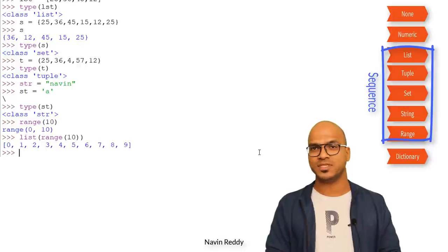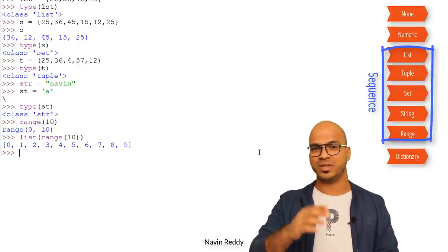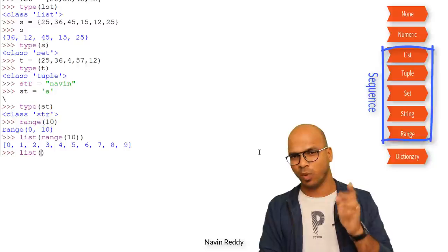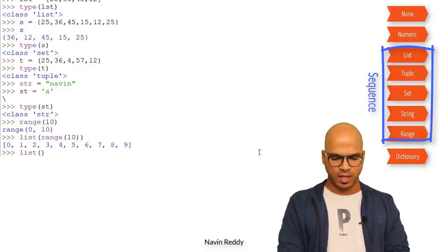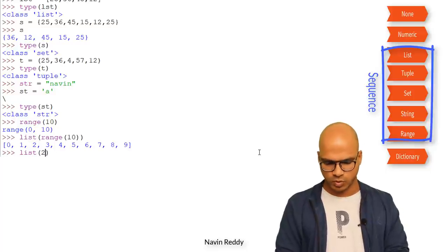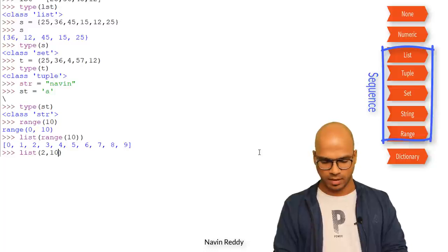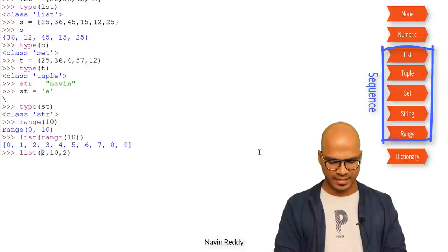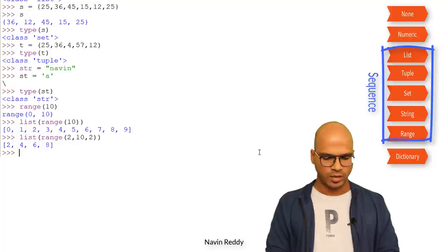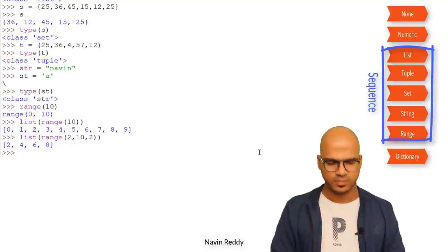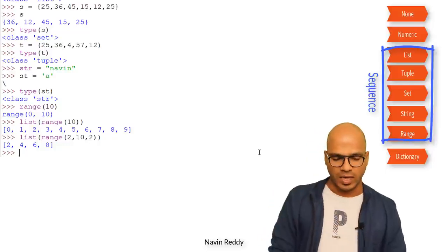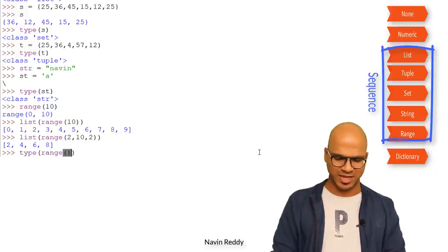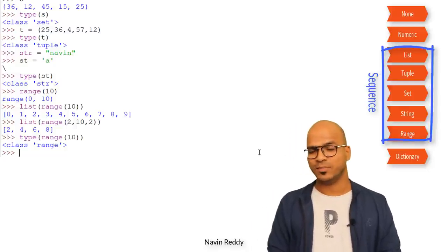You can also use range with a step. For example, to print all even numbers from 2 to 10, you specify a start, stop, and step: range(2, 11, 2). Range takes three parameters, and you can see we get 2, 4, 6, 8. All these sequence types give us a sequence of values. You can also check the type — it returns range.